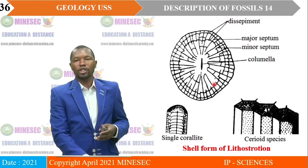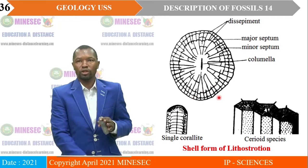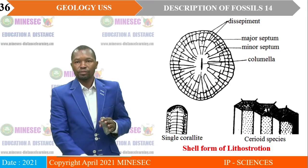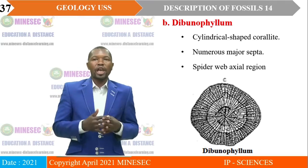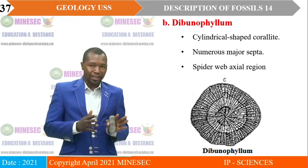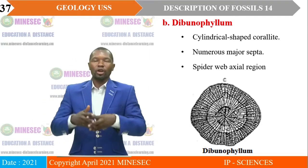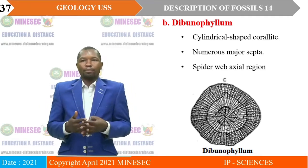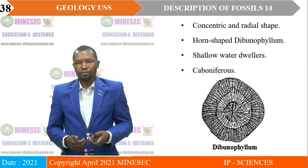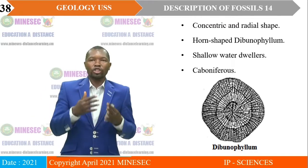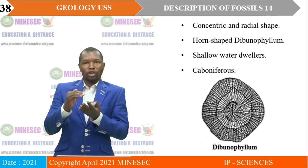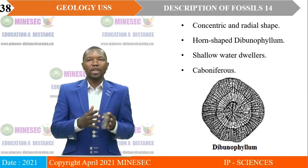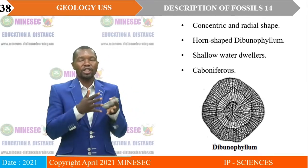The diagrammatic representation shows the dissepiment, the major septum, the minor septum and the columella. The second example is Dibunophyllum. It has a cylindrical-shaped corallite, with numerous major septa taking the shape of a spider web, especially in the axial region. It also has a concentric and radial appearance. The fact that it has a concentric and radial shape makes them shallow water dwellers, and they are aged Carboniferous.